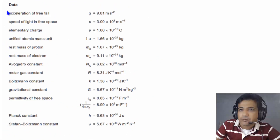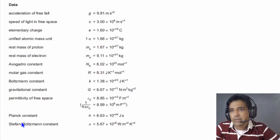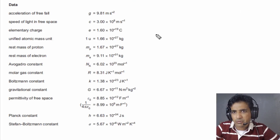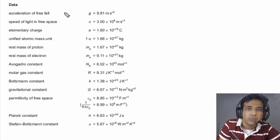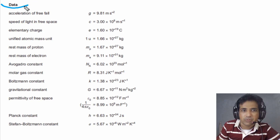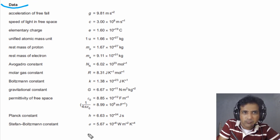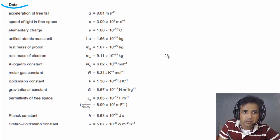On the second page of the exam paper, you can find values of some important constants. You may need some of them for calculations in your exam. Here is a list of all important constants that you might need.